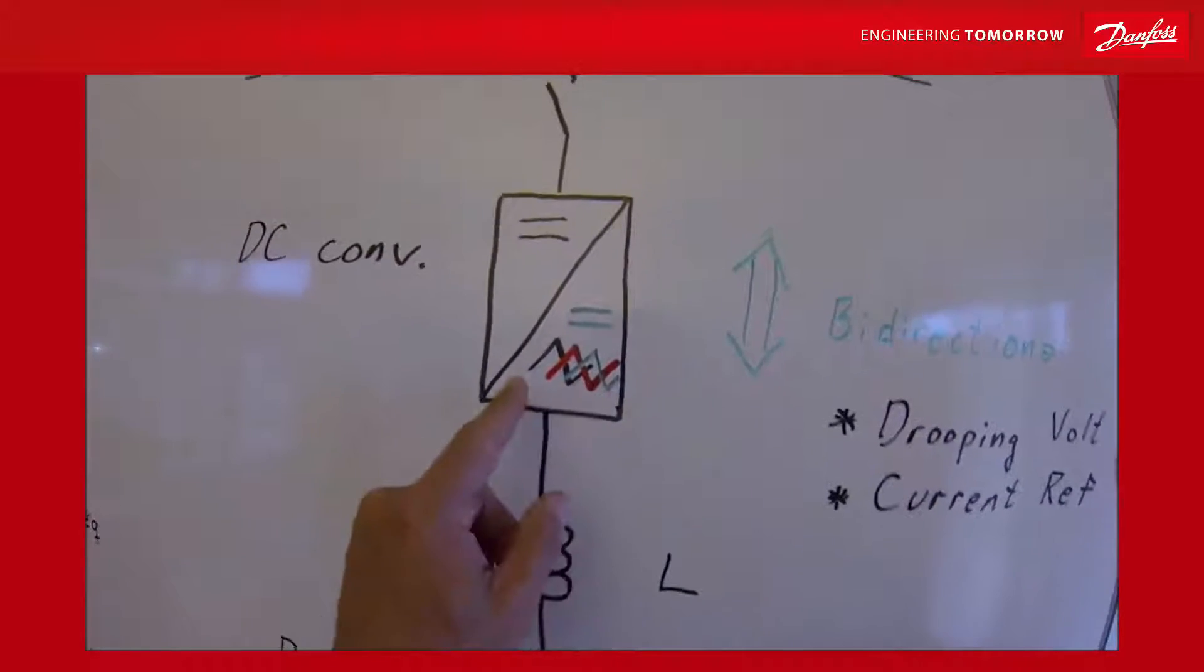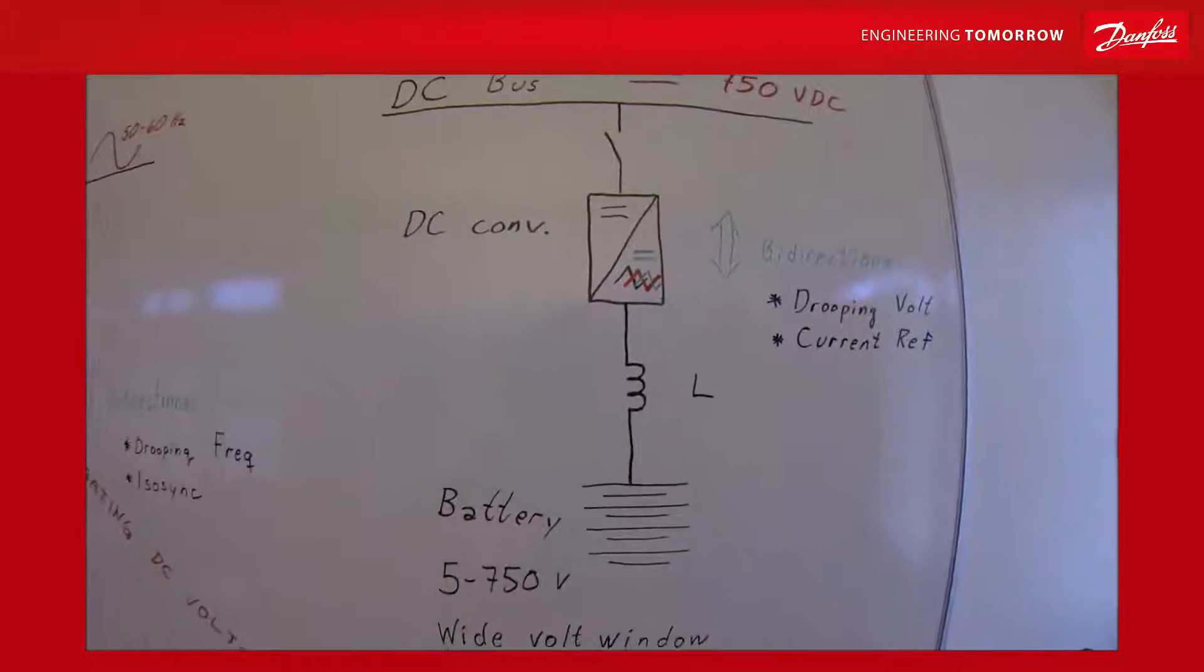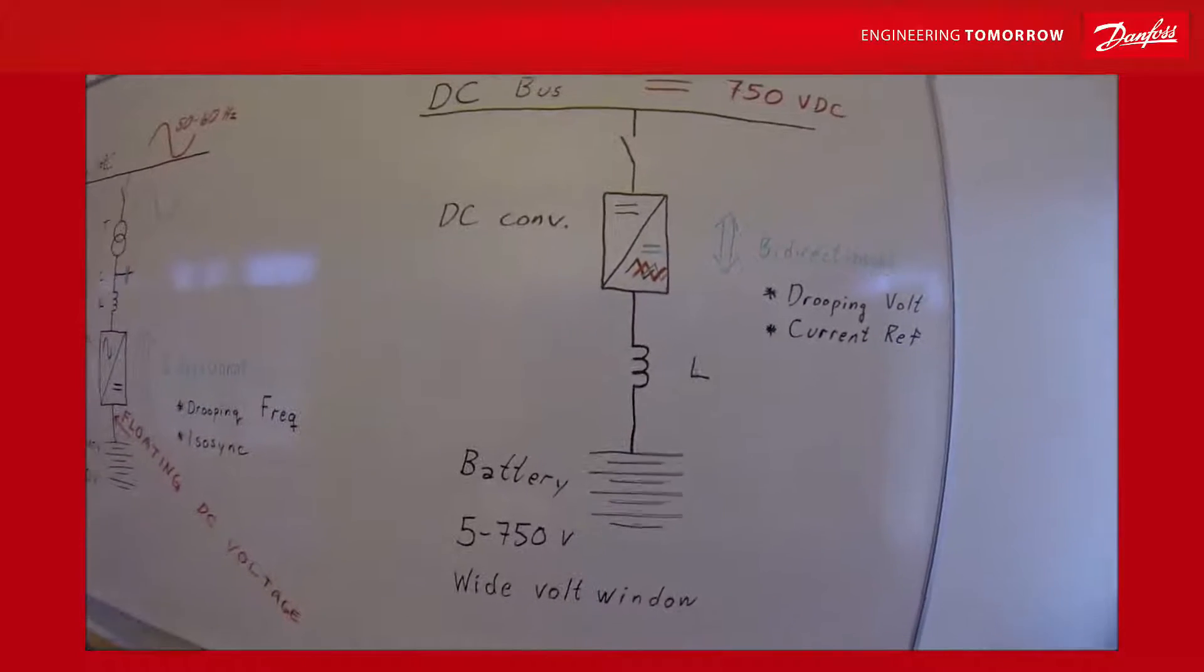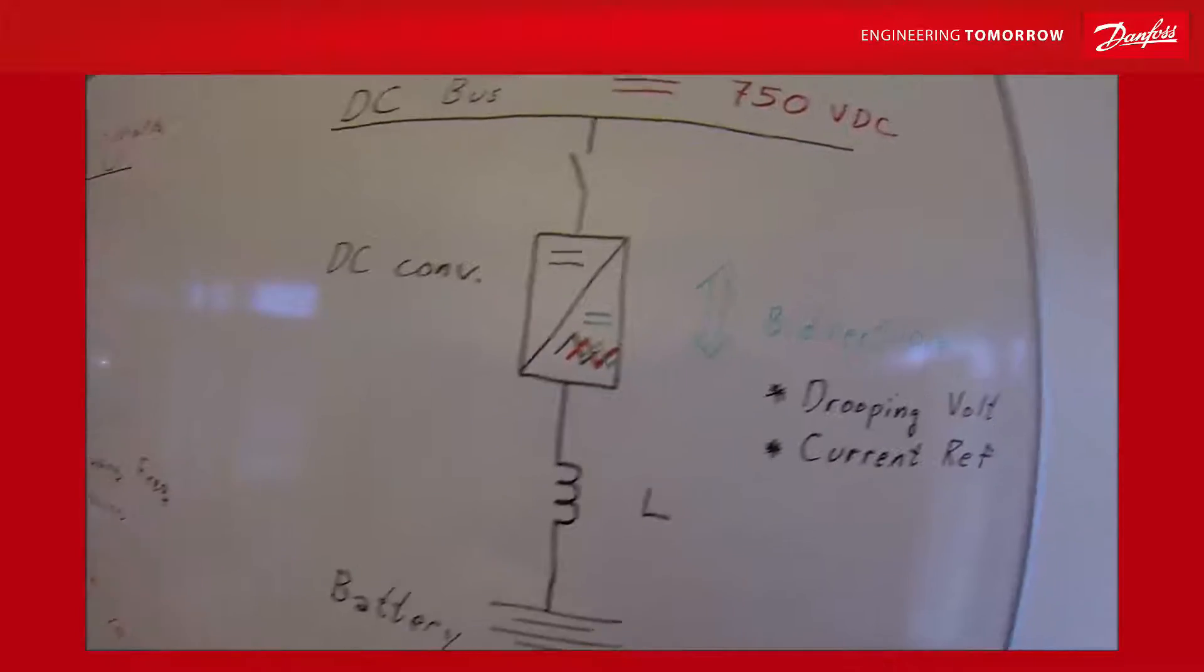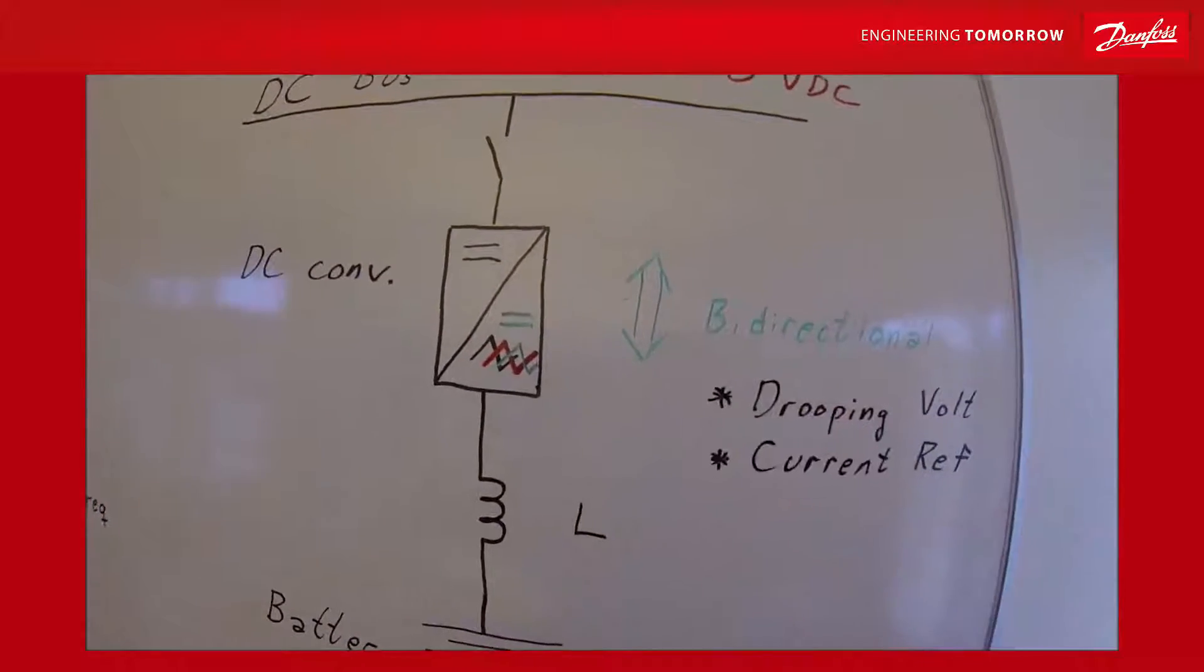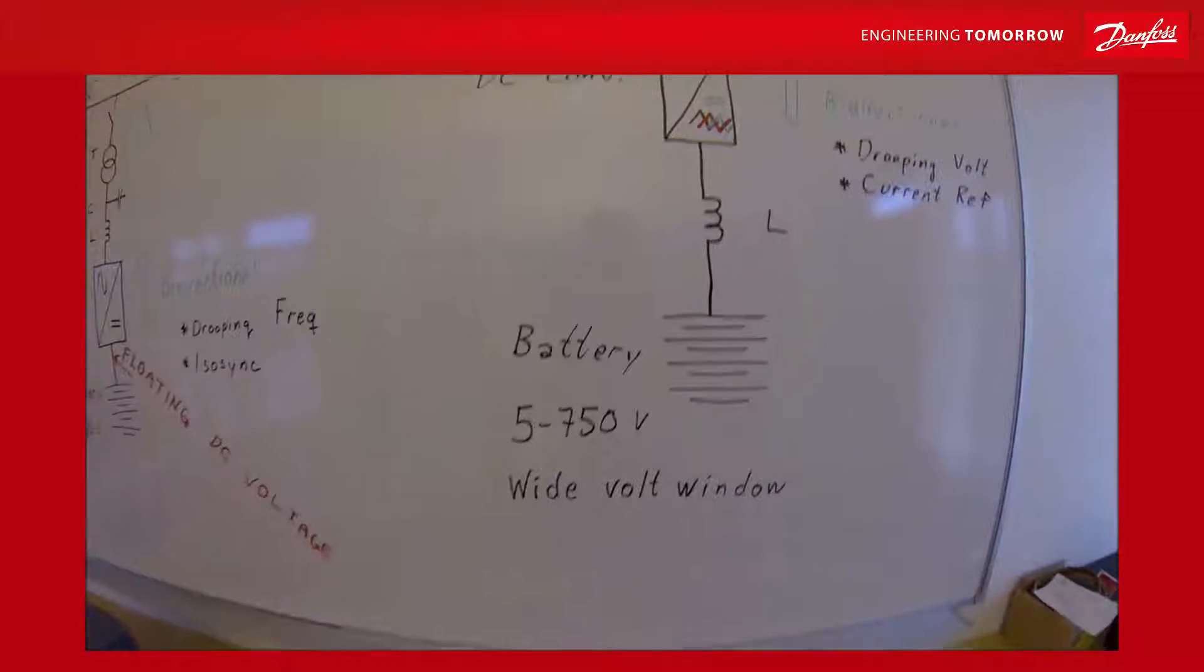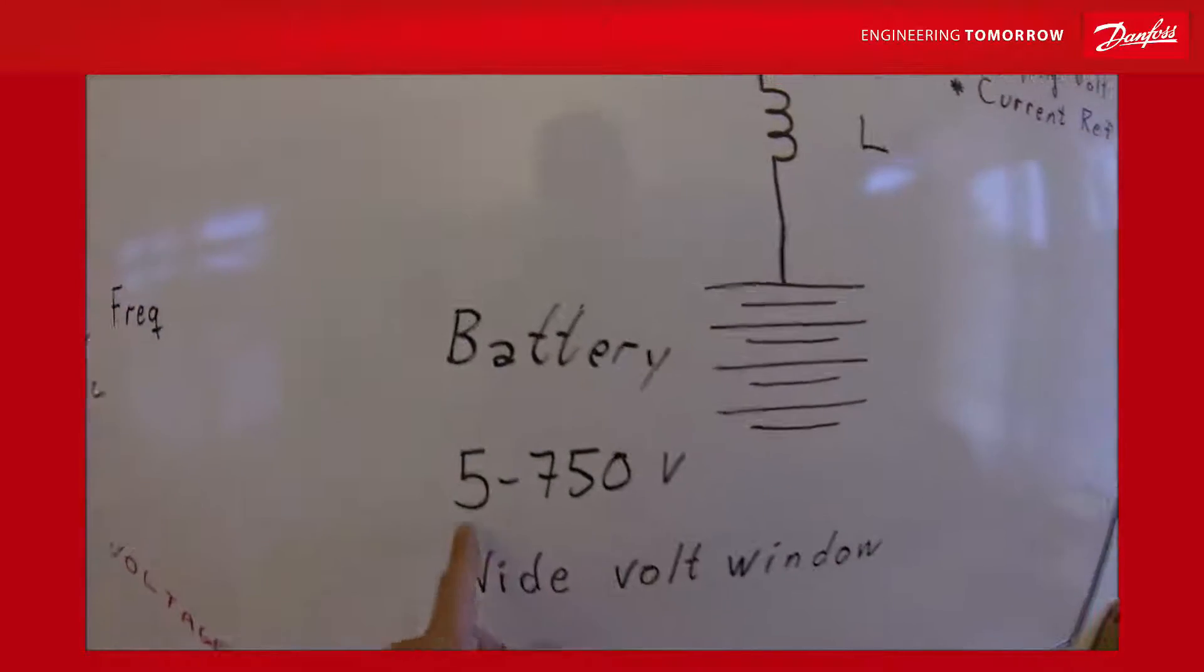This is called interleaving. We're going to take a look at that closer on the training course for the DC DC converter. But basically we now have a bi-directional controller for DC. Special with this thing is that the voltage range is very wide.